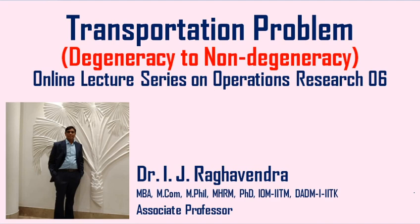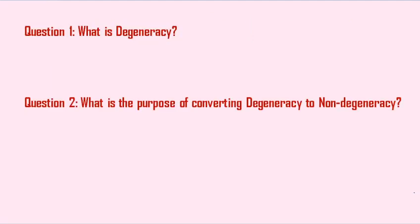Before starting with the topic, we will address two questions. What is DGNC, and what is the purpose of converting DGNC to non-DGNC? The answer to the first question is: m plus n minus 1 is not equal to A — that is, number of rows plus number of columns minus 1 is not equal to number of allocations. It is referred to as a DGNC problem.